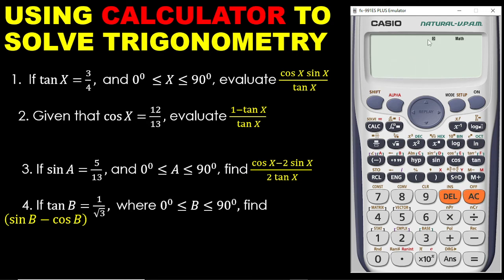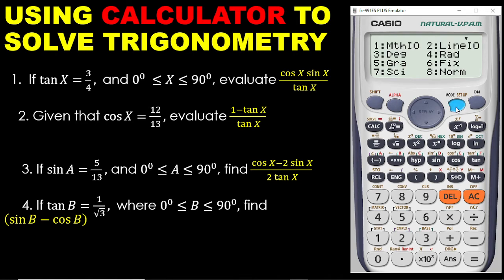We said that you must always change the D into R. To do that, you press Shift, you press Mode, and then you select Option 4. Now my calculator is ready to solve these questions.